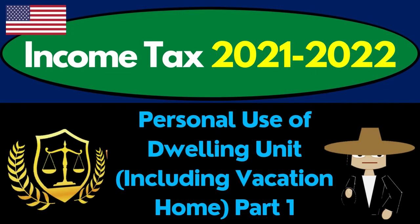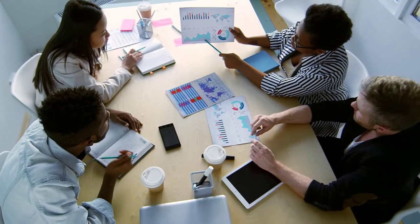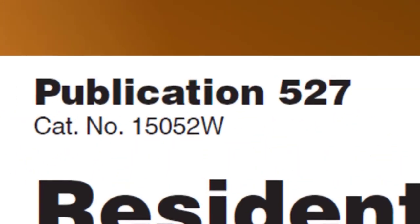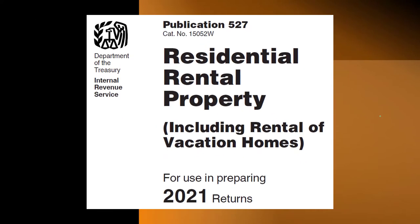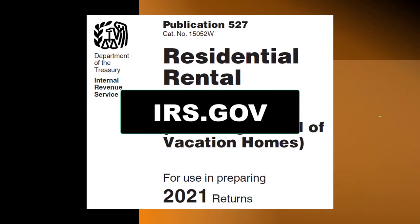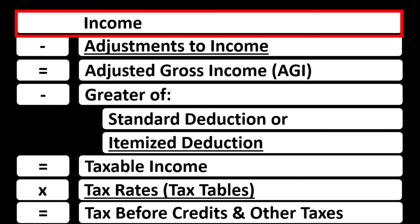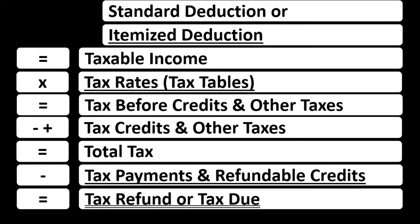Income tax 2021-2022. Personal use of dwelling unit including vacation home, part number one. Get ready to get refunds to the max, diving into income tax 2021-2022. Most of this information can be found in Publication 527, Residential Rental Property Tax Year 2021, on the IRS website, irs.gov. The income tax formula focuses on line one income, with a sub-schedule covering income and expenses — essentially an income statement.